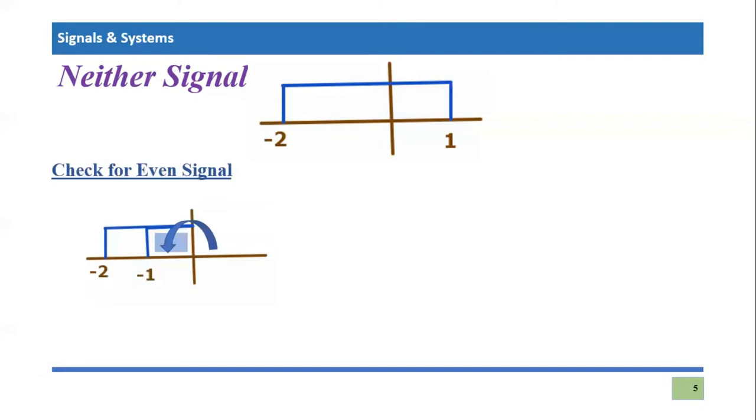So if you are going to fold a signal, this will look like this. I hope you understand that this area is basically folded over this area. So now this shaded part shows the overlapped area. And from the graphical understanding of even signals, we know that if signal is not completely overlapped after this folding across the Y axis, then the signal will not be termed as an even signal. So that means this signal is not an even signal.